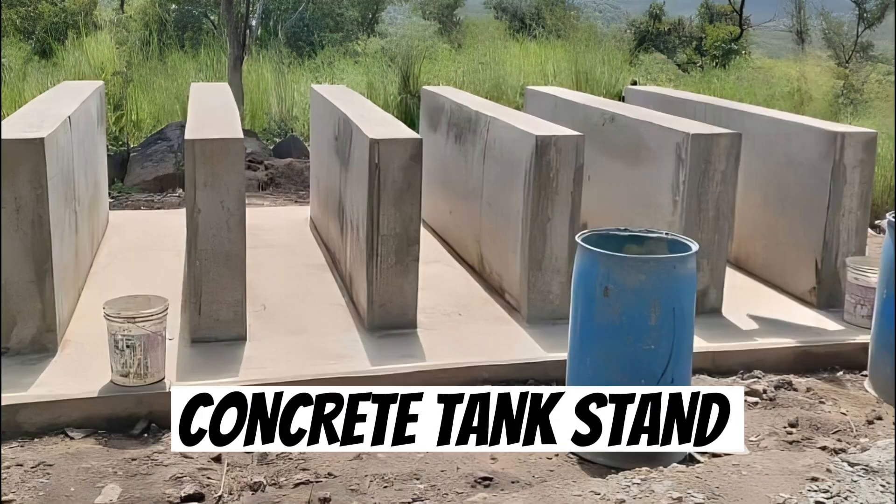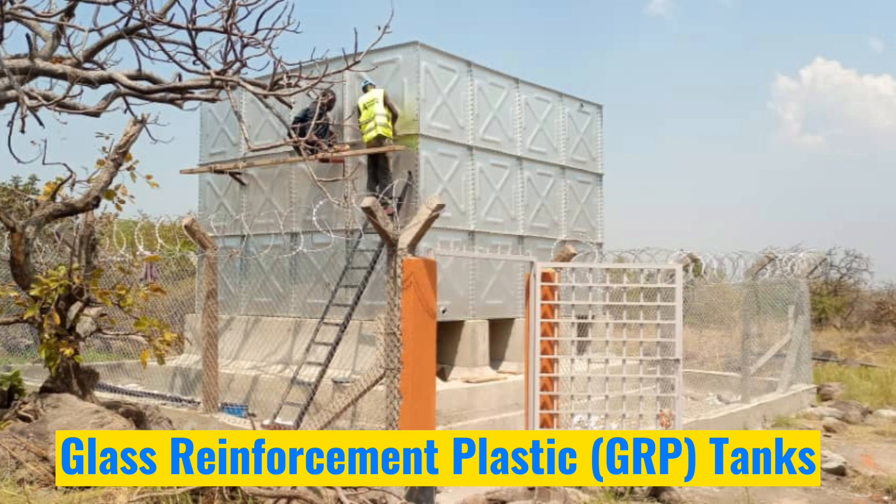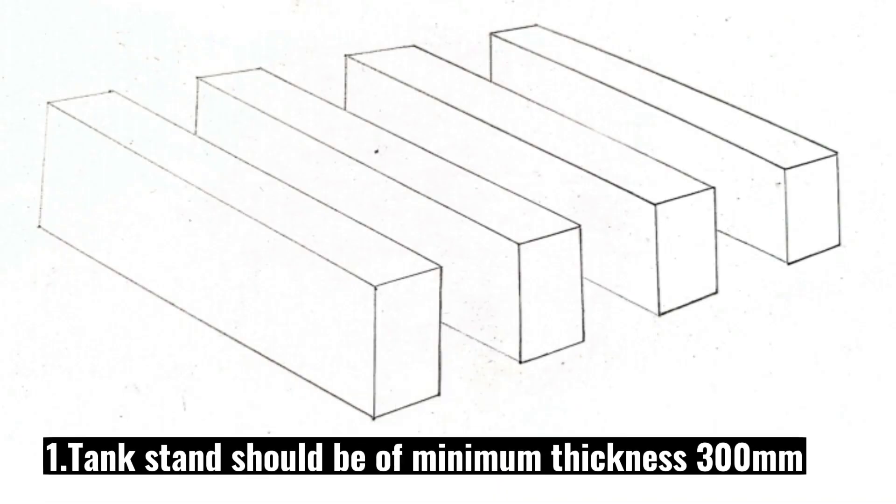Here is how we build a concrete tank stand or foundation for these GRP tanks. We consider these three measurements here. First, the tank stand should be of minimum thickness 300mm.